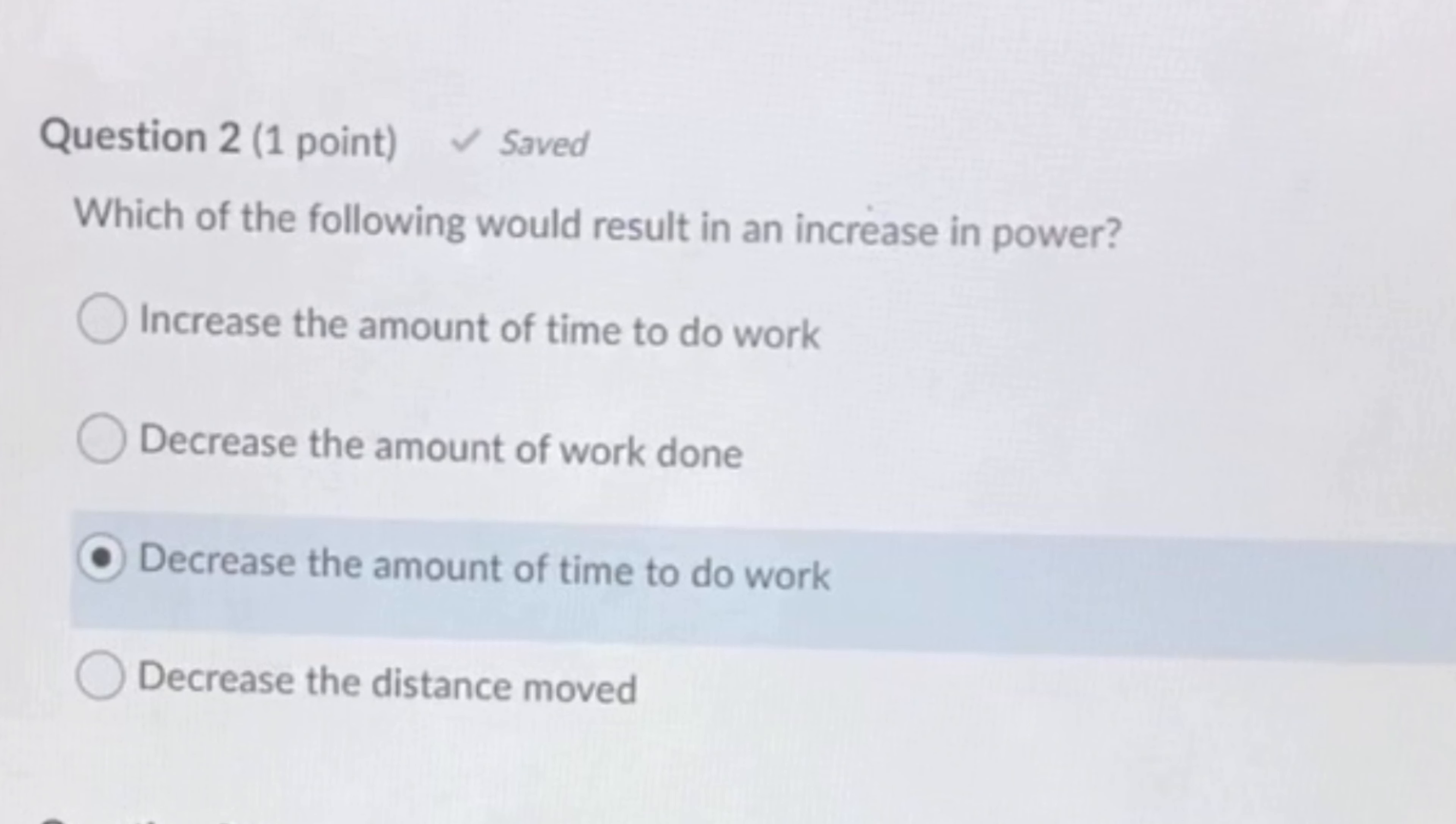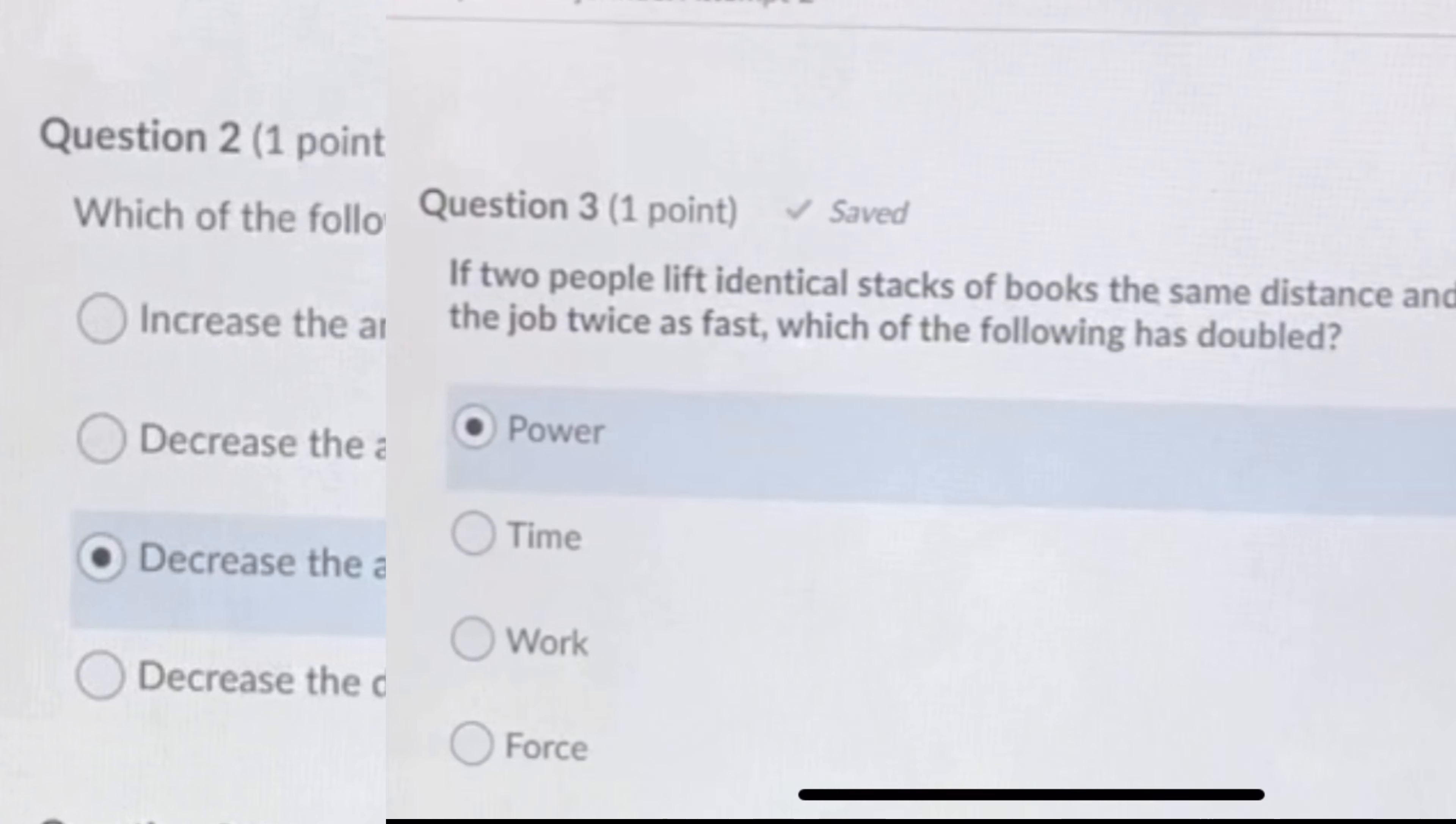If two people lift identical stacks of books the same distance and one person does the job twice as fast, which of the following has doubled? That would be power, because if your rate at getting the work done is twice as fast, then your power would also be twice as fast. It's just directly correlated and basically the definition of power.